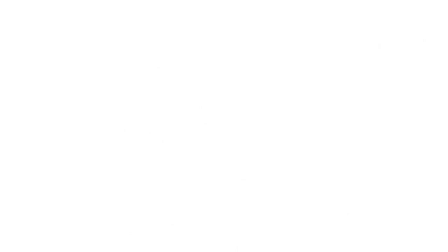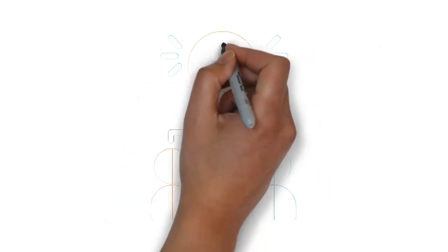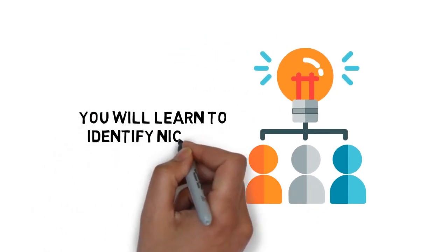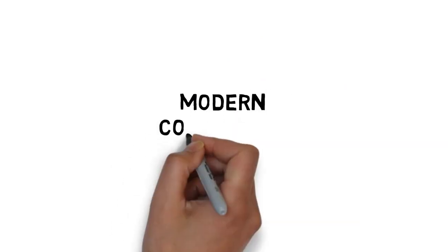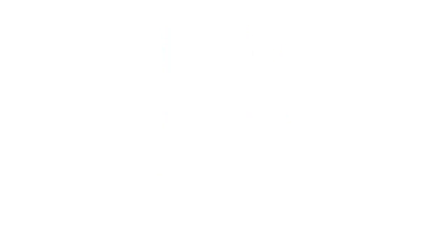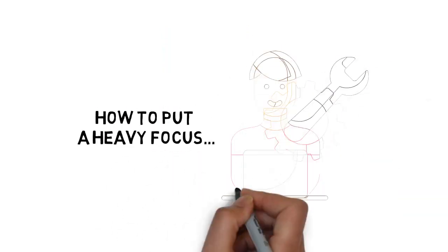With my advice, you are going to understand the importance of modern affiliate marketing strategies. You will learn to identify niches based on ROI and other crucial factors. You will understand modern conversion systems. You can begin to understand different monetization methods. You're going to learn exactly how to put a heavy focus on the commercial value of your niche.